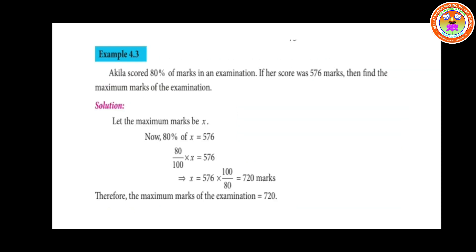Example 4.3: Akila scored 80% of marks in an examination. If her score was 576 marks, find the maximum marks. Let the maximum mark be x. So 80% of x equals 576, that is 80 divided by 100 into x equals 576. This gives x equals 576 into 100 divided by 80. On simplification, x equals 720 marks. Therefore, the maximum marks of the examination equals 720.